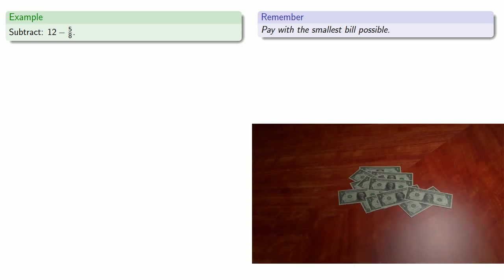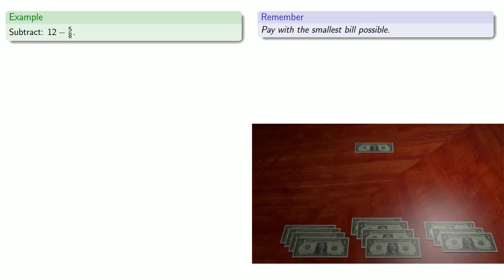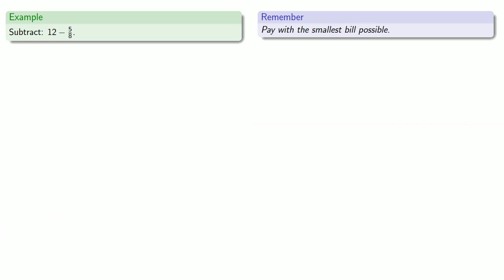Well, you could give the cashier all $12 in your wallet, but you're more likely to just hand over a single bill, which is more than the cost of the item. Now, the mathematical equivalent of that involves two things. First, we note that 12 is 11 plus 1.